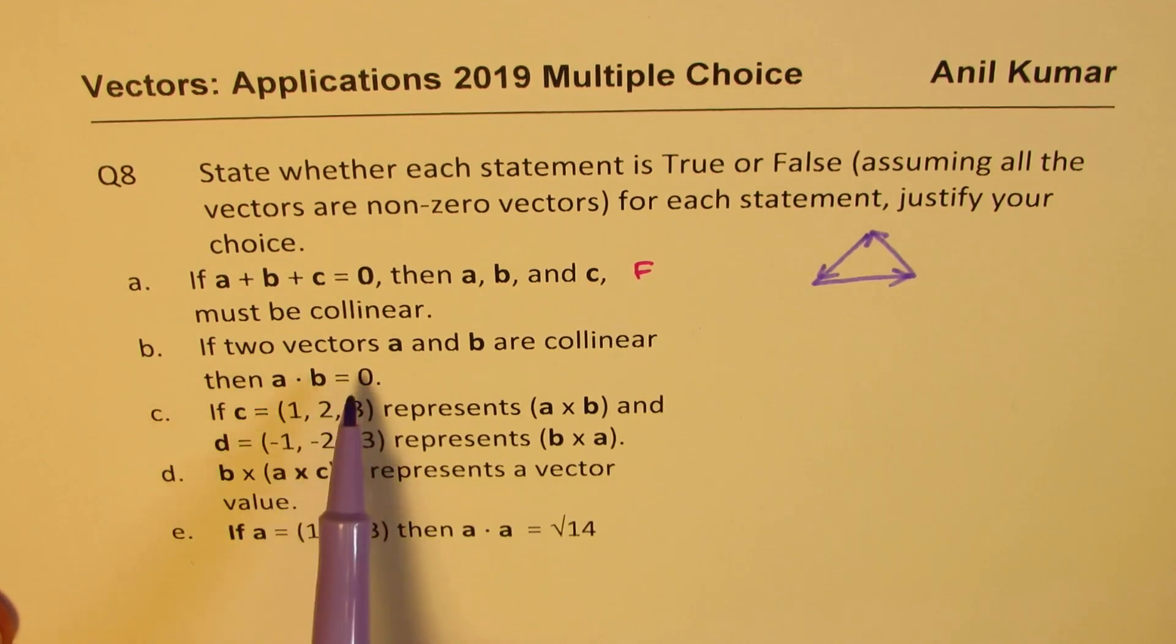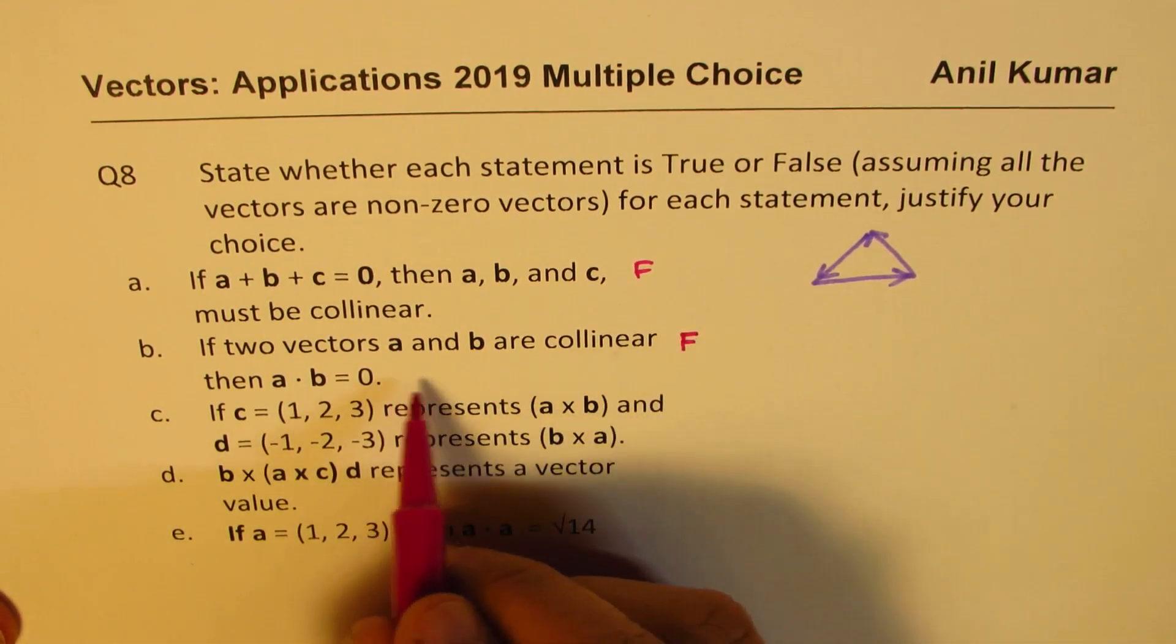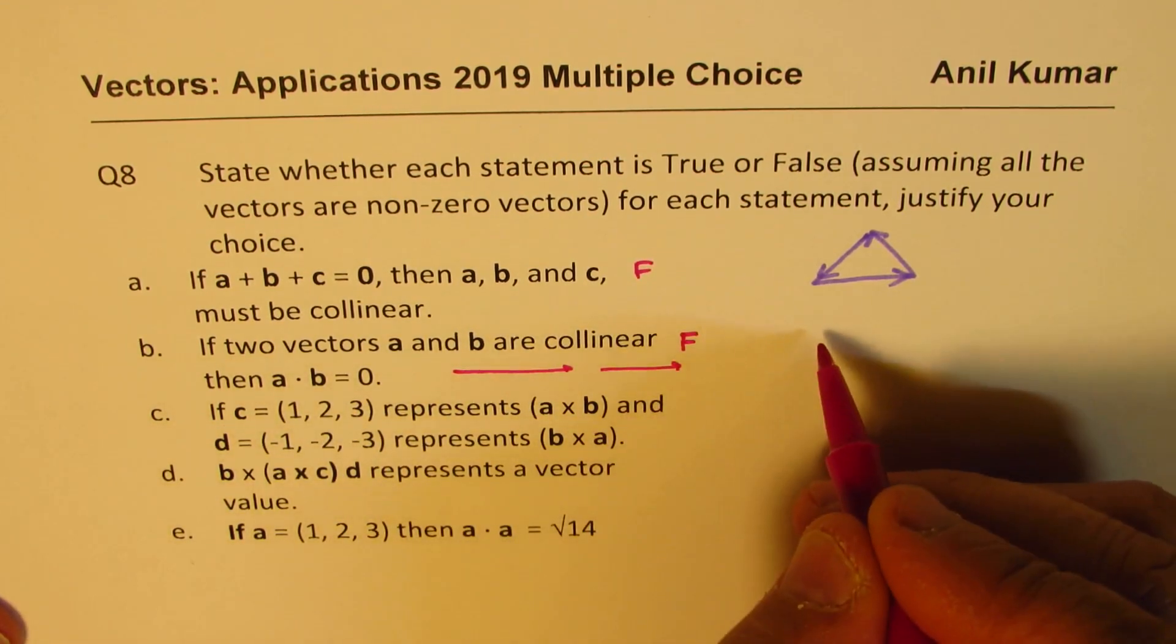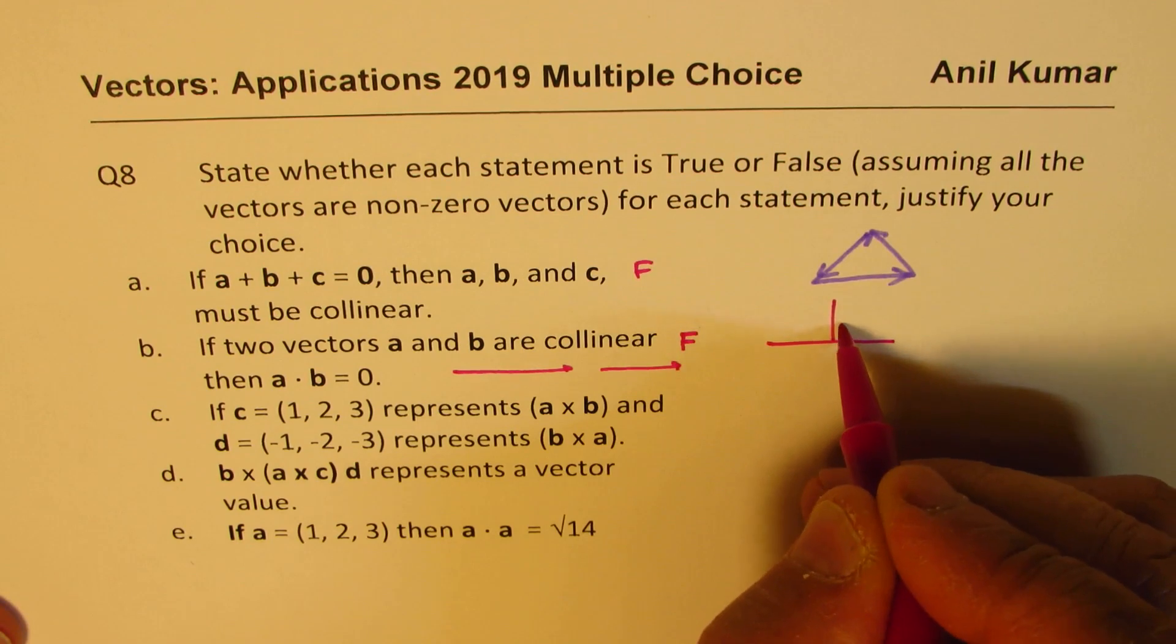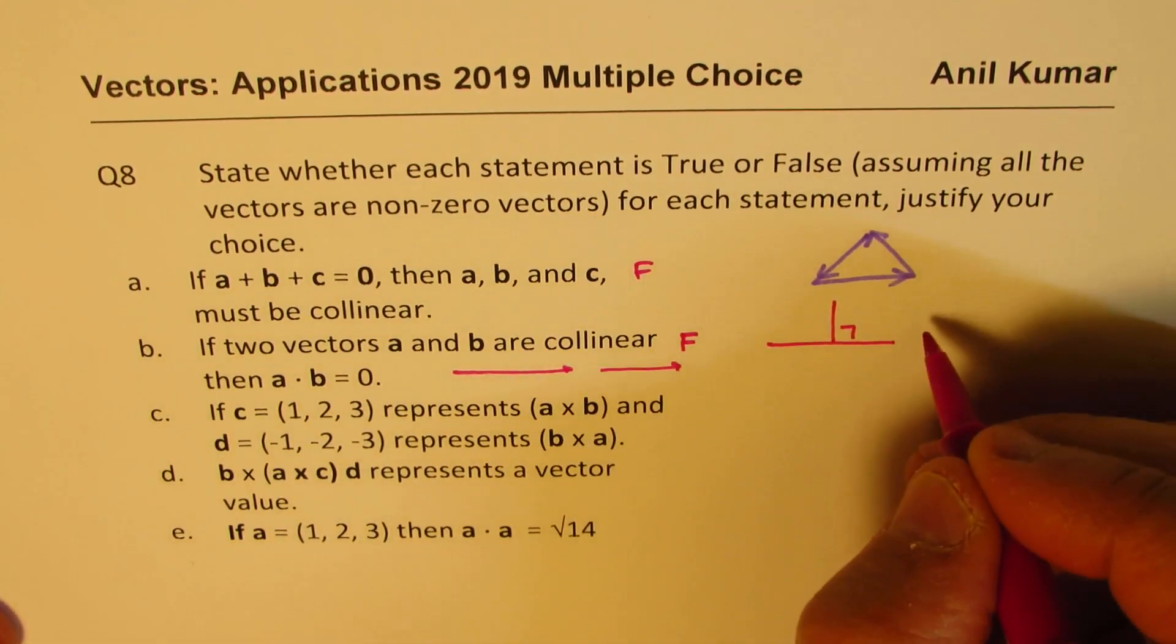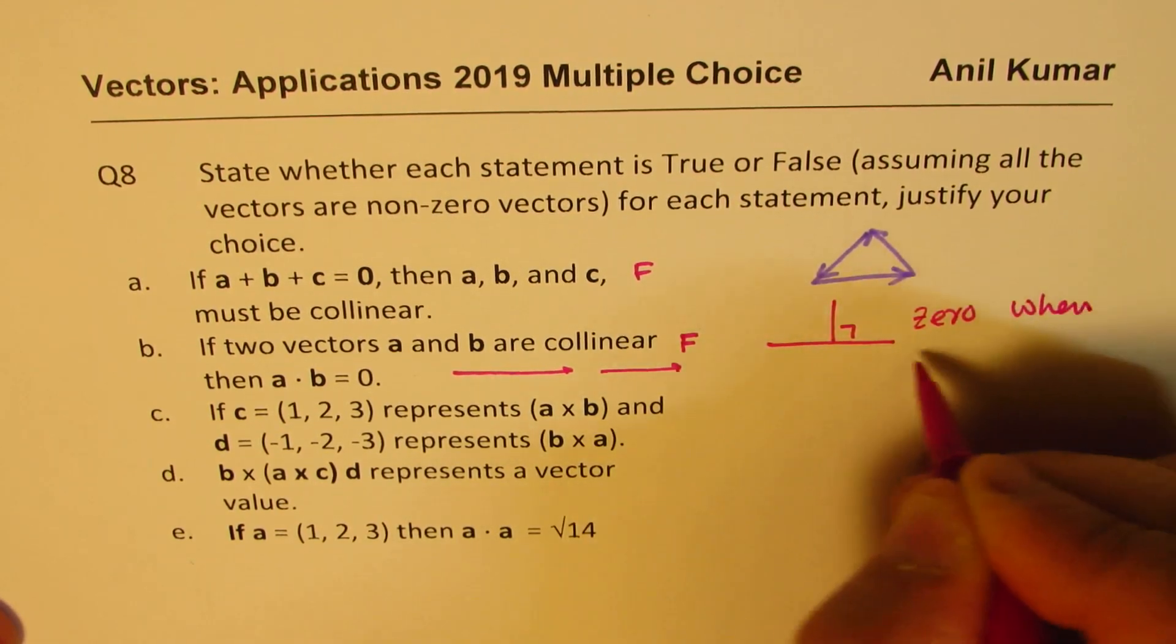B, if two vectors A and B are collinear, then the dot product is zero. Well, this is also false. If they are collinear, means if they are the same direction, then it's not zero. It is zero when they are perpendicular, because cos theta is zero for this. So it is zero for 90 degrees. Zero when perpendicular.